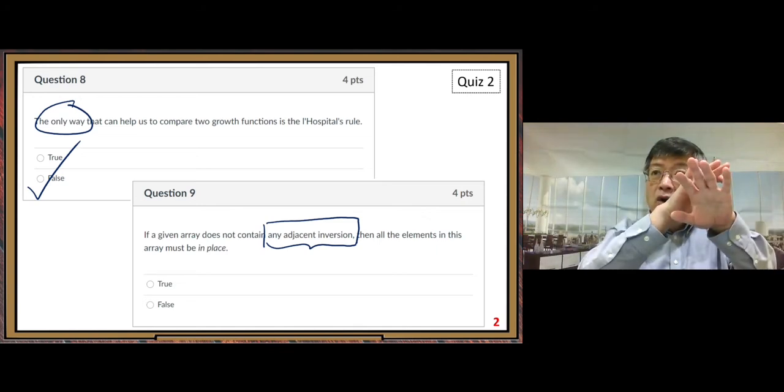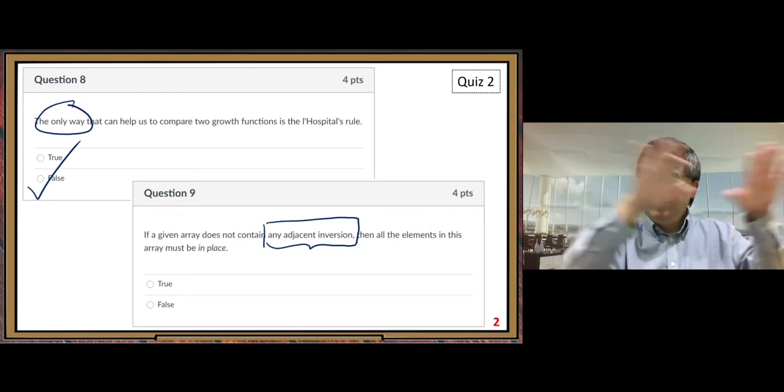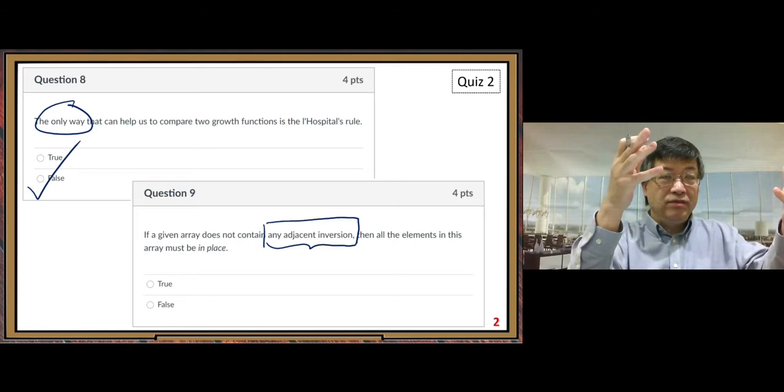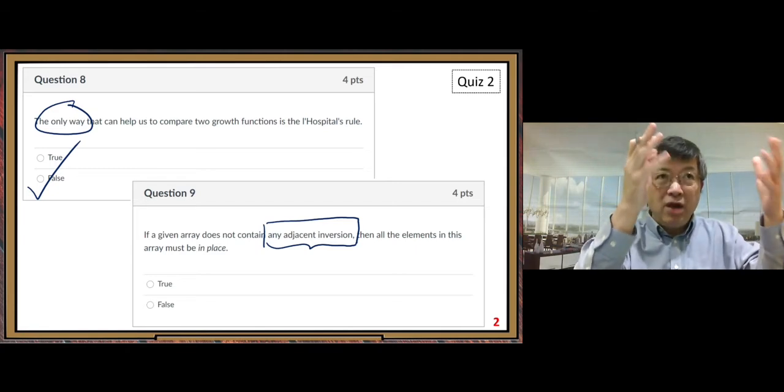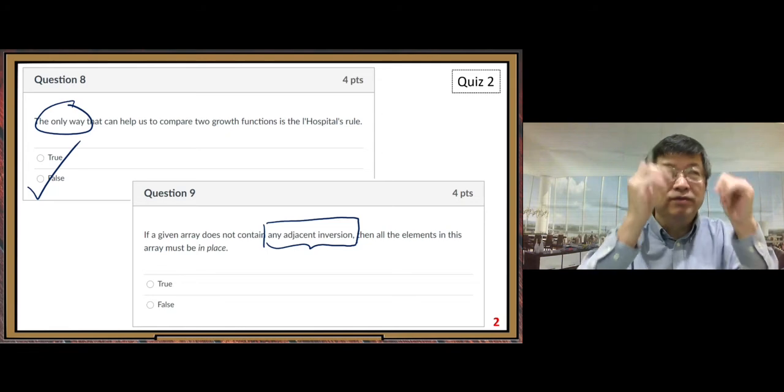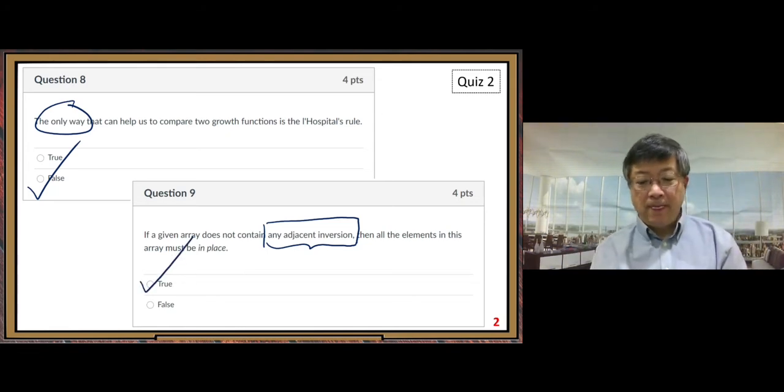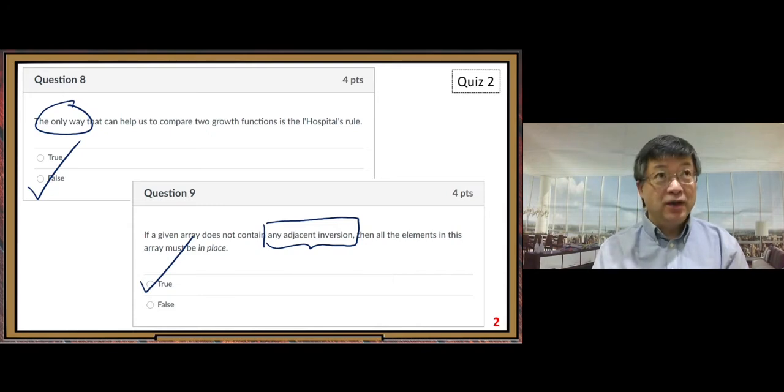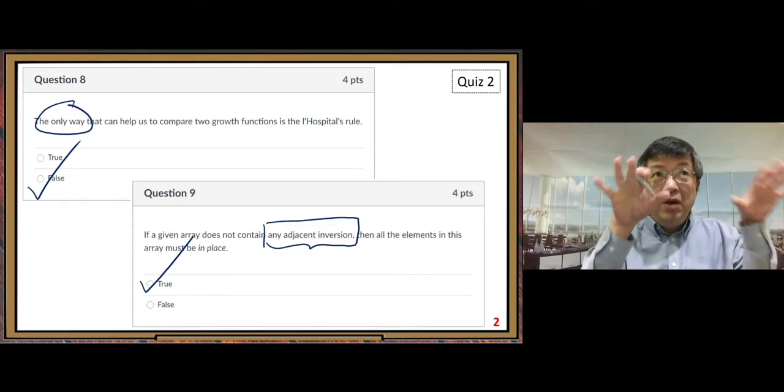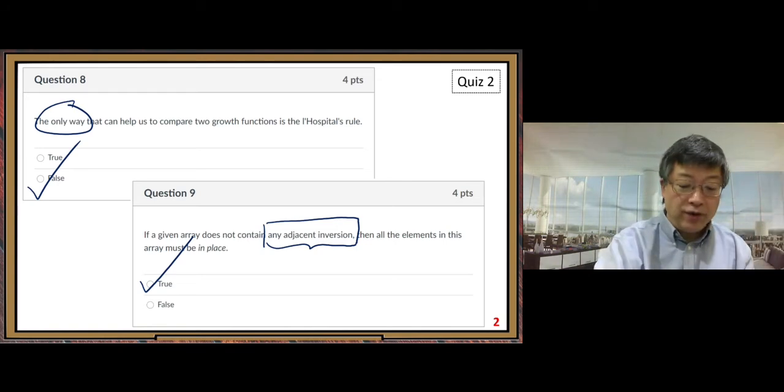All elements are in increasing order. Otherwise, otherwise there must be an adjacent inversion. So the answer is true. Must be in place.